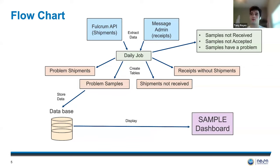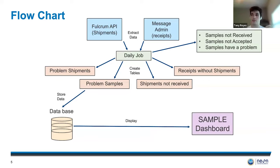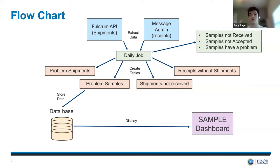All of the sample-level information — if you want to look at a specific shipment and see what exact samples had a problem — is stored in a problem samples table. The other two tables, shipments not received and received without shipments, catch if there are any shipments that haven't been received yet, as well as any receipts that do not have a matching shipment ID. The second table makes a bit less sense, but the case is that it exists, so I'm still flagging that information. And for shipments not received, if on a later day I get a receipt that matches the shipment, I would just remove it from the shipments not received table. All four tables are stored in the database that Jim and I created, and that's what is displayed on the dashboard.